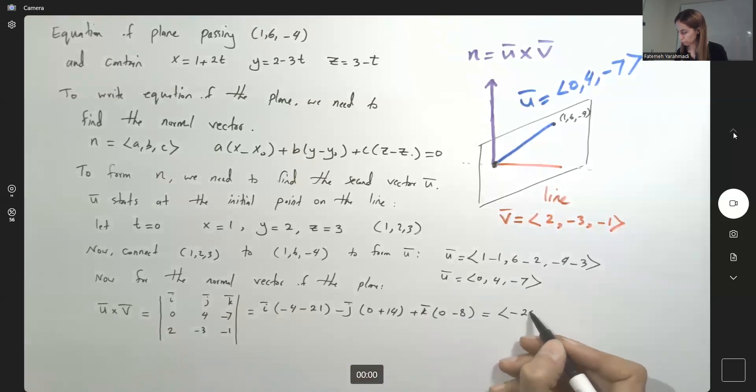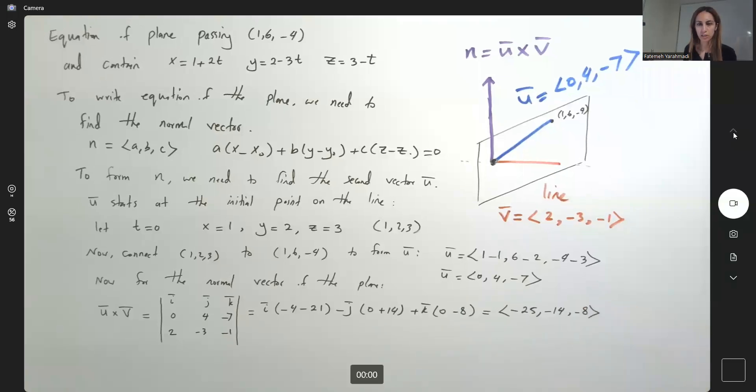negative 25, negative 14 and negative 8. It might be in the same or opposite direction, it doesn't matter eventually we simplify this.